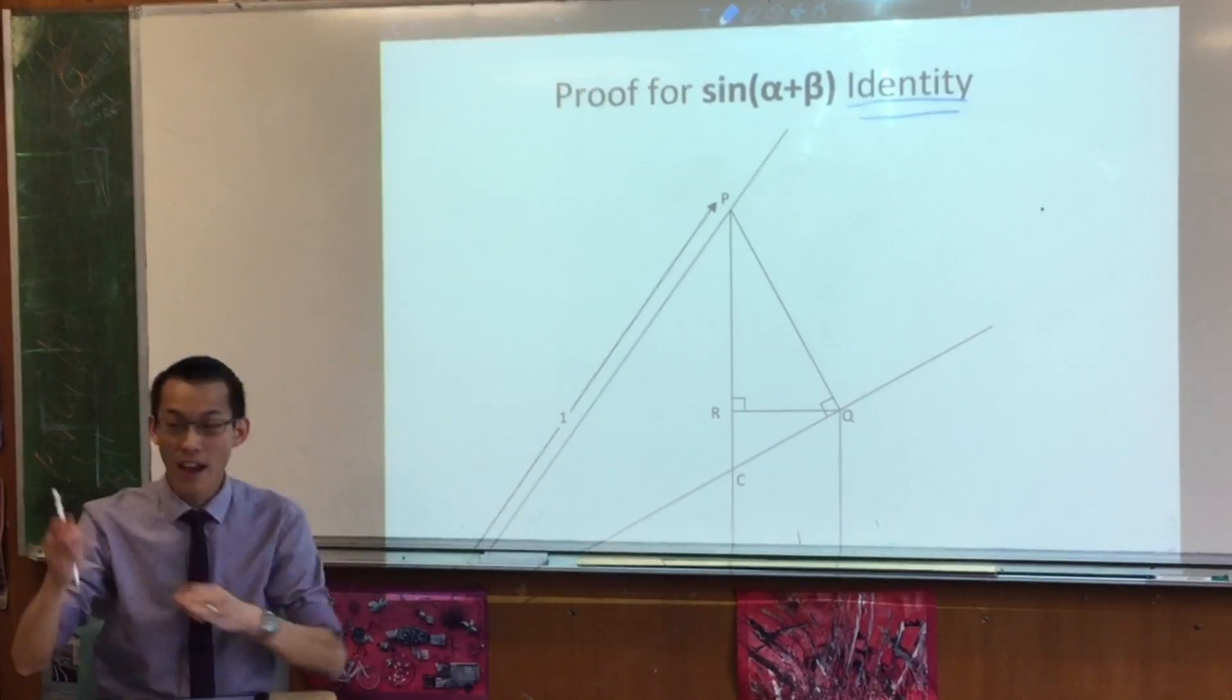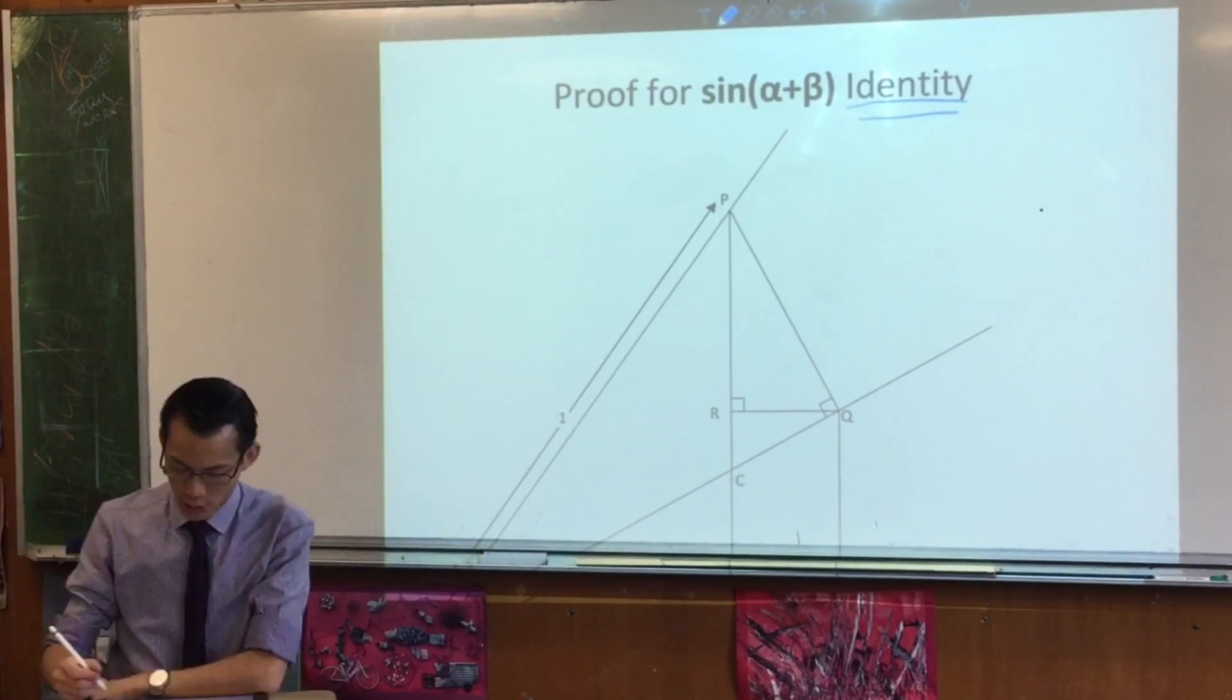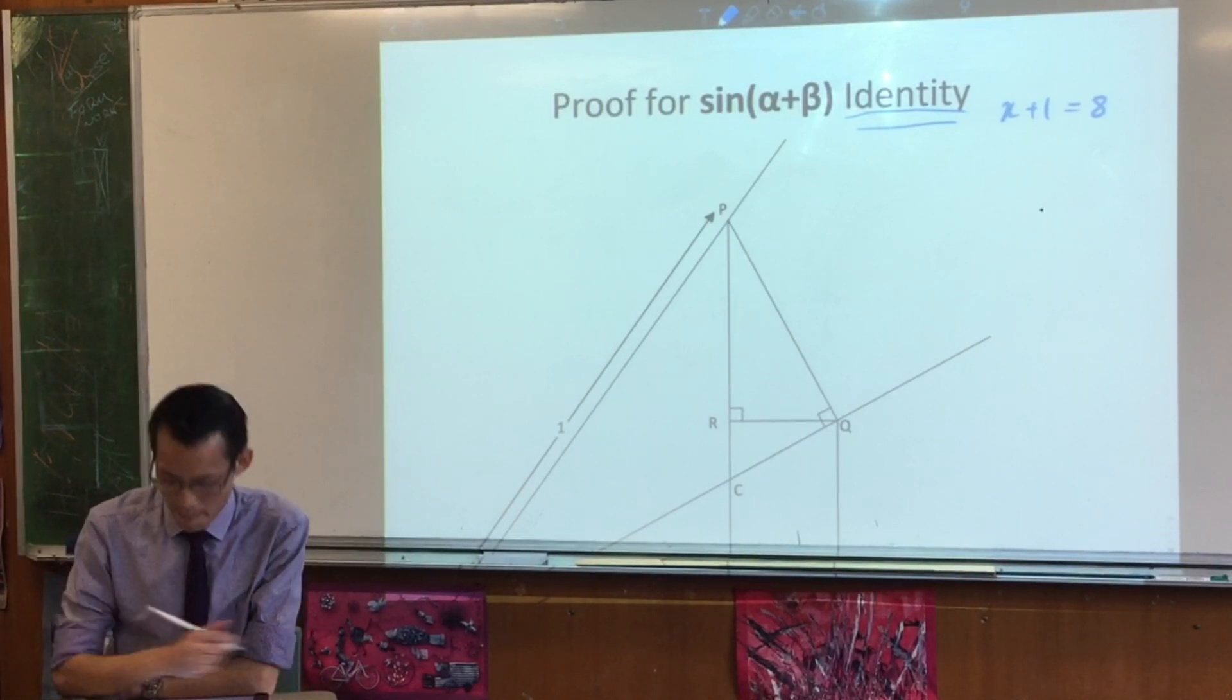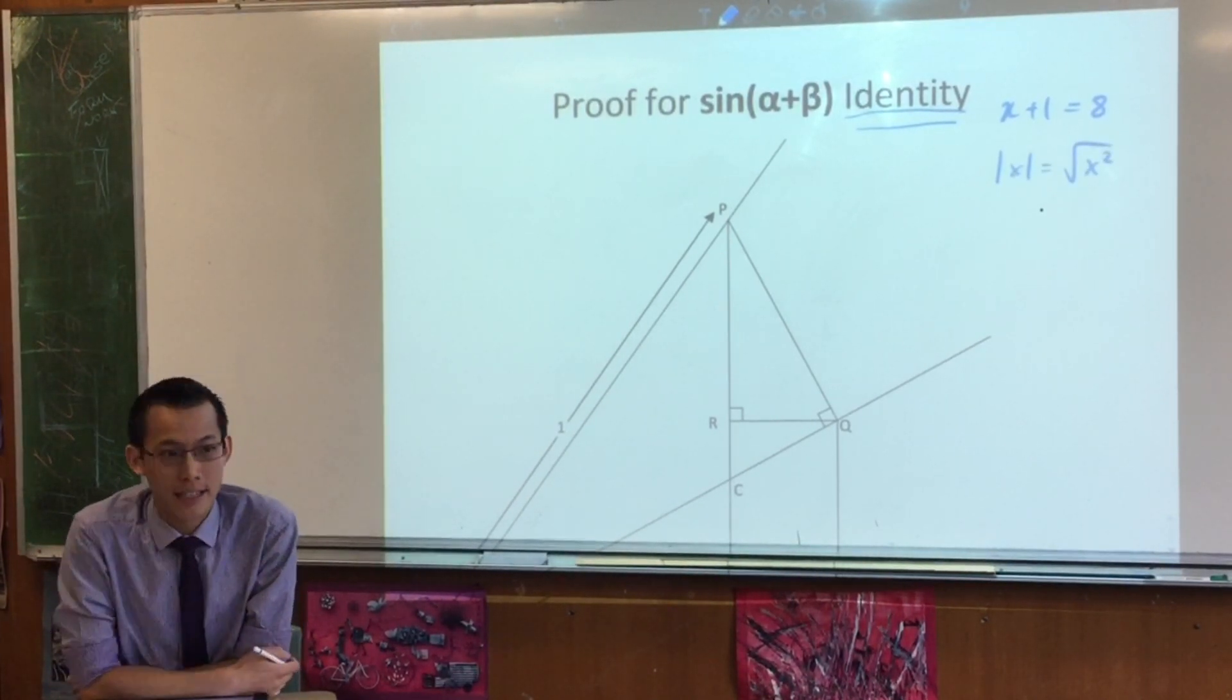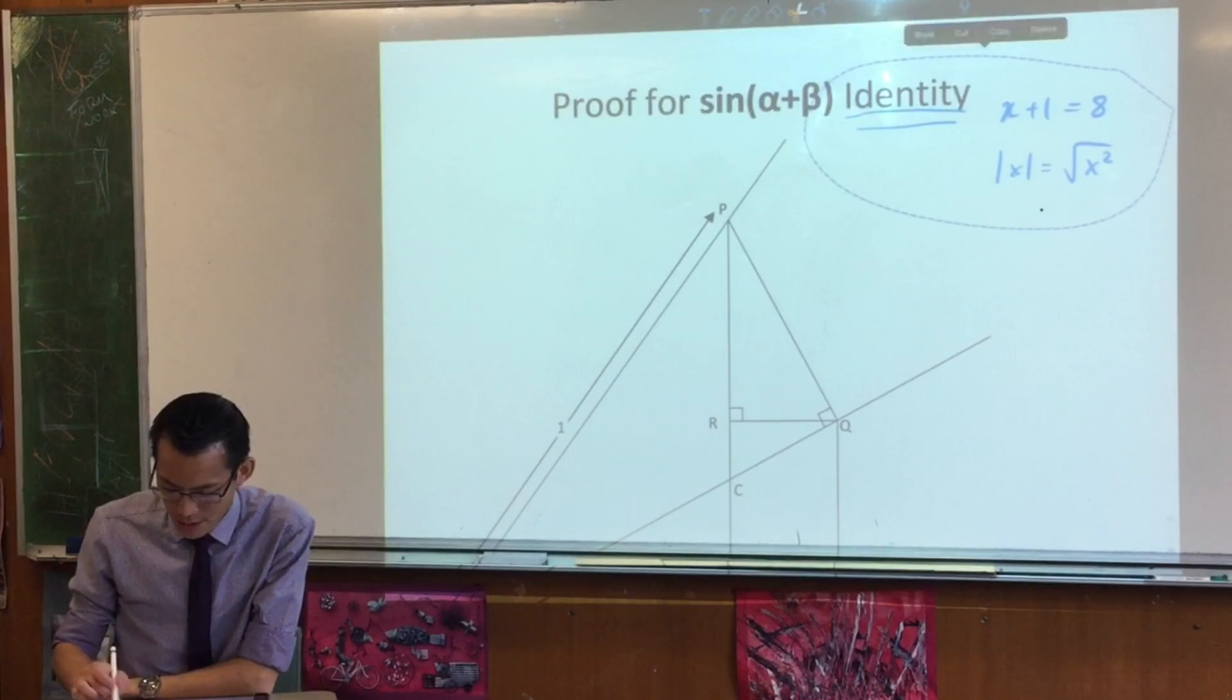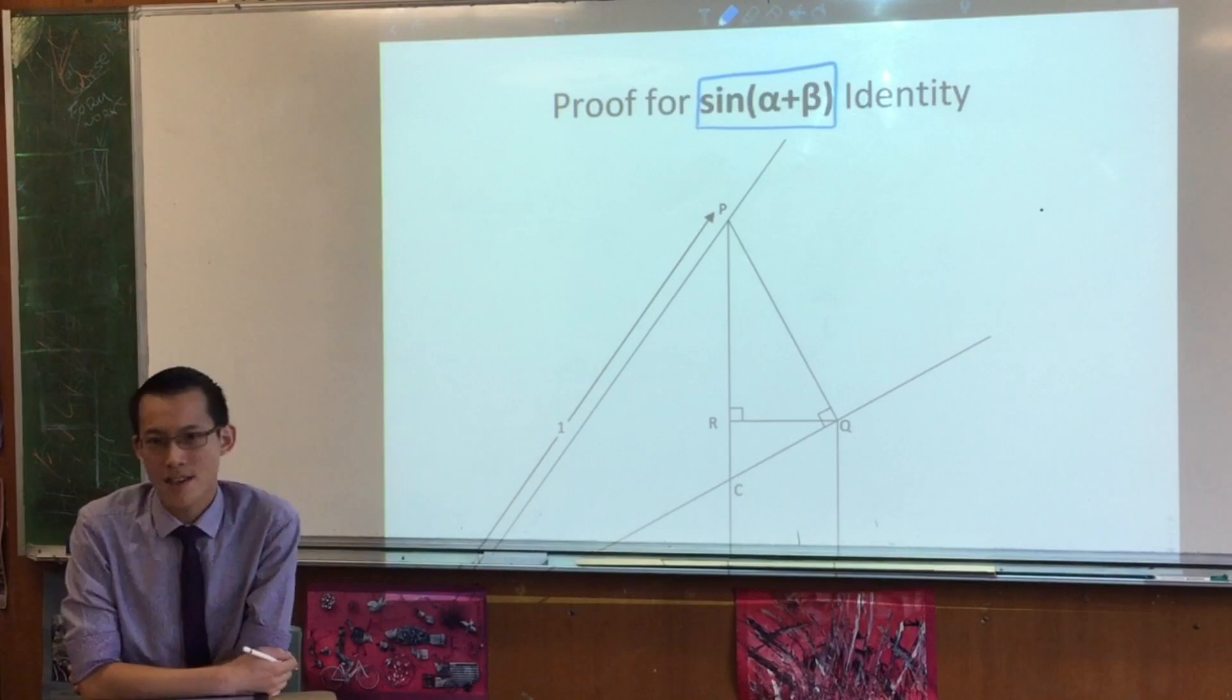Yeah, identity is always true. Okay, identities are true for all values of whatever pronumerals are in there, right? So for example, just to come back to this, here is an equation, and it's only true for one value of x. But here is an identity. It's true for all values of x that you can supply. Does that make sense? Cool. So what we're going to do is we're going to come up with an identity for what this is equal to.